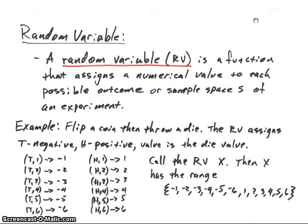Let's first look at what a random variable is. A random variable is really just a way to generalize probability problems or probability experiments. A random variable is a function that assigns numerical values to possible outcomes of the experiment, or all of the values of our sample space.